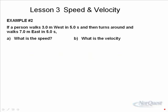In example number two, the same person, instead of walking three meters east to begin with, walks three meters west, then turns around and walks seven meters east in five seconds. In this case, what's the speed, what's the velocity?